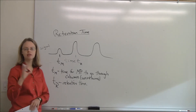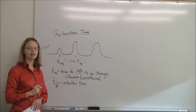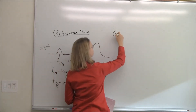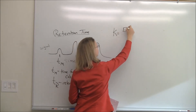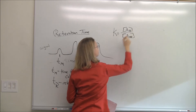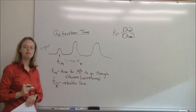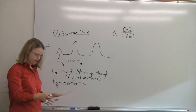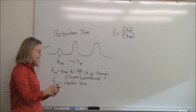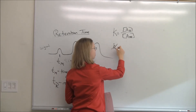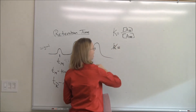We talked in the thermodynamics lesson about big K — the equilibrium coefficient — which is the concentration of A in the stationary phase over the concentration of A in the mobile phase. The problem is we don't really measure big K directly. Instead, the factor we like to use from the chromatogram is K-prime, the capacity factor.